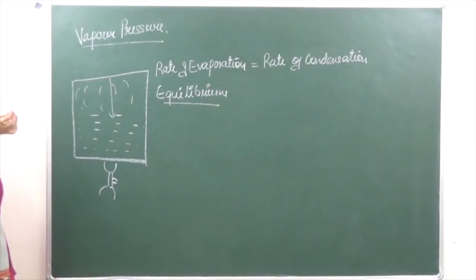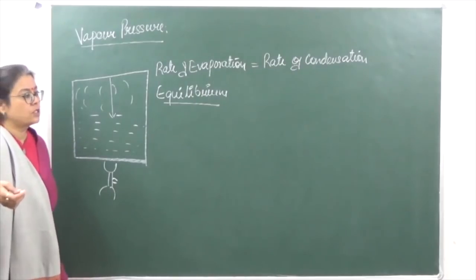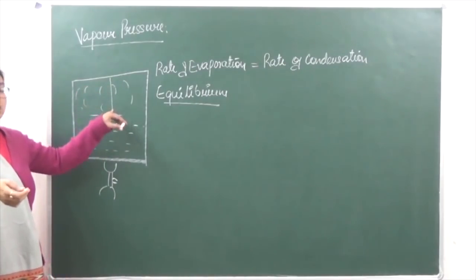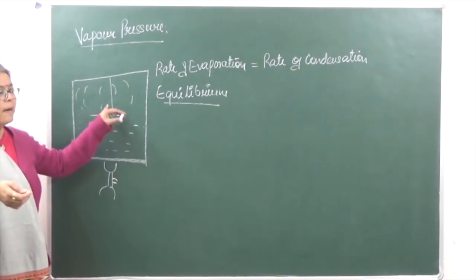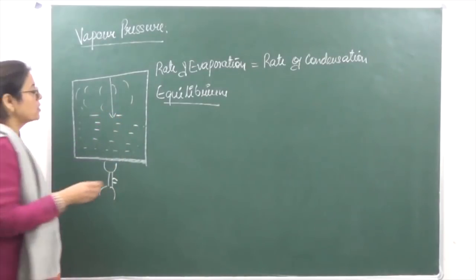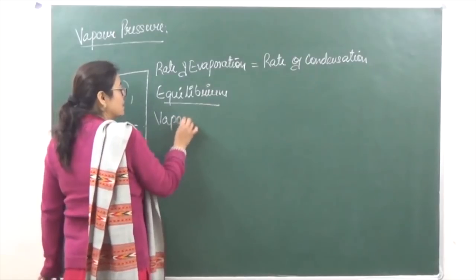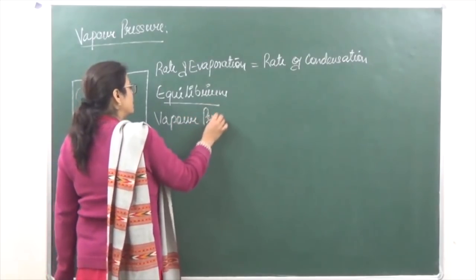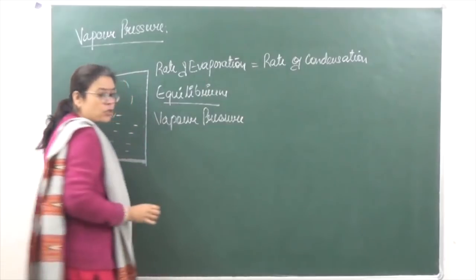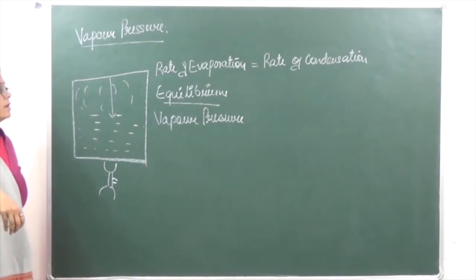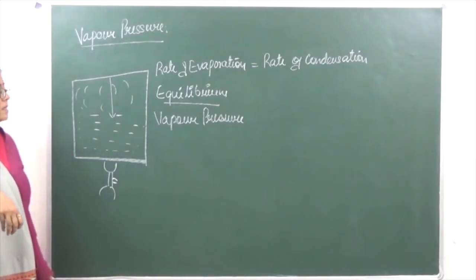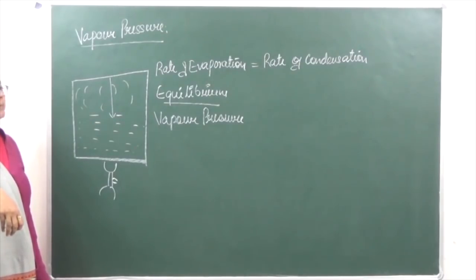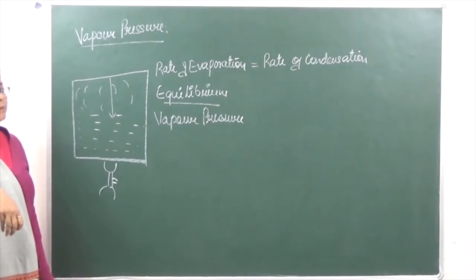At equilibrium, the rate of evaporation becomes equal to rate of condensation. The vapor at equilibrium is going to exert pressure by hitting the walls of the container, and that pressure is known as vapor pressure. Vapor pressure is the pressure exerted by the vapors of the liquid above the surface of the liquid at the equilibrium point in a closed container.